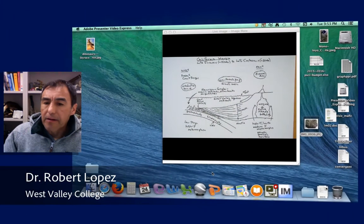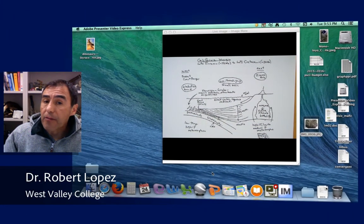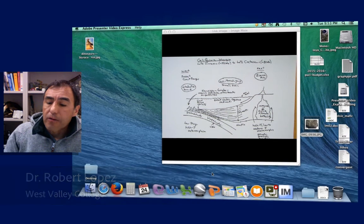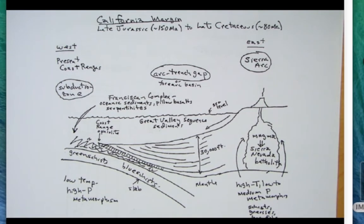Hello and welcome back to California Geology. Today I'm going to talk about the California margin and metamorphic rocks, going back to when the subduction zone Franciscan formation was being formed as well as the Sierra Nevada batholith during Mesozoic time.